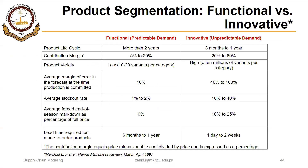We will start with product segmentation, based on an article by Marshall Fisher published in Harvard Business Review in 1997. He classified products into two categories: functional products and innovative products. Functional products have predictable demand, while innovative products have unpredictable demand.